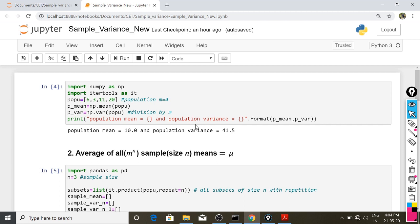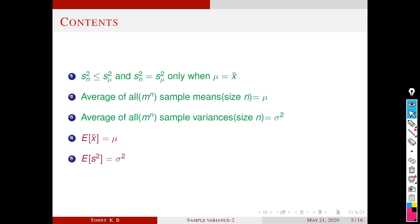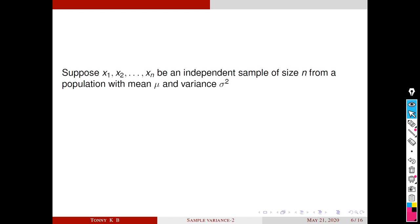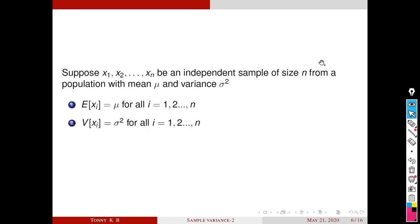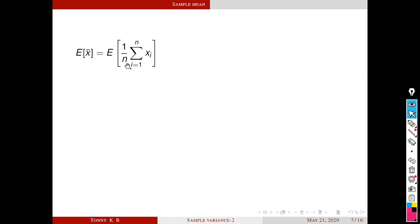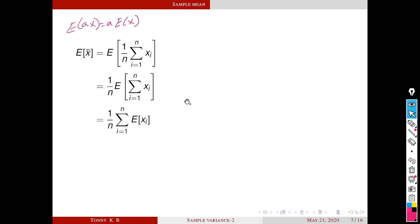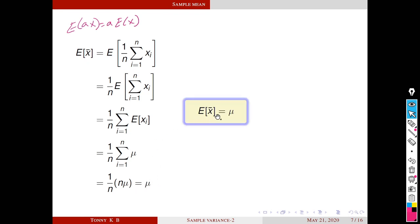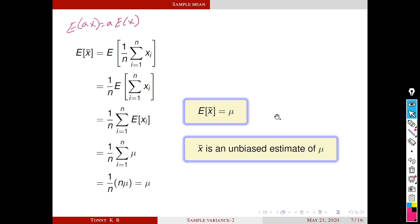We now see the generalization: E(x̄) = μ and E(s²) = σ². Suppose x1, x2, …, xn is an independent sample of size n from a population with mean μ and variance σ². We treat the xi's as independent random variables with E(xi) = μ and Var(xi) = σ² for all i. Considering E(x̄): since x̄ = (1/n)·Σxi, we have E(x̄) = (1/n)·Σ E(xi) = (1/n)·nμ = μ. So x̄ is an unbiased estimate of μ and therefore a good estimate of μ.